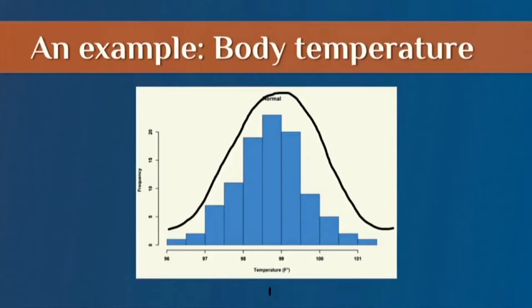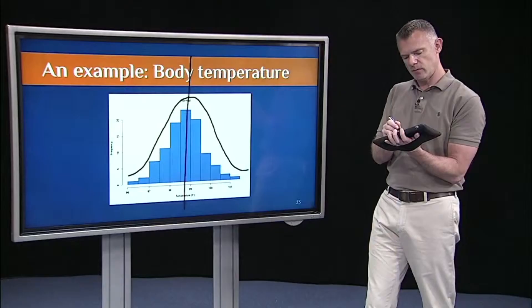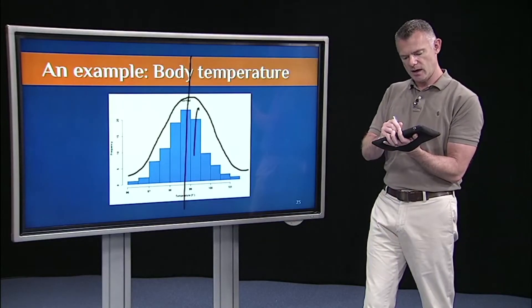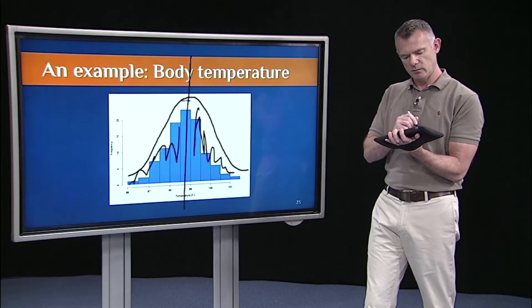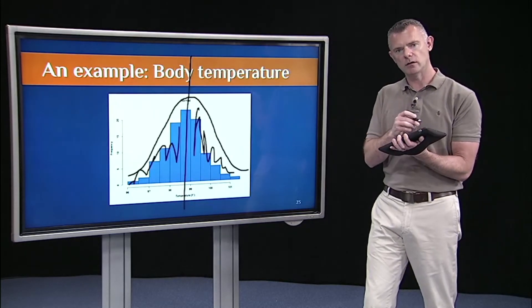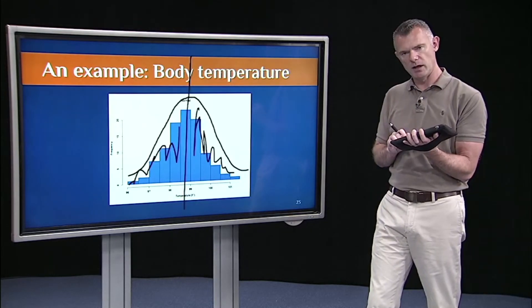And it's symmetrical around the mean, around the average. You can see the number of cases beyond the mean is about equal to the number of cases below the mean. So it's symmetrical and has this nice normal bell-shaped curve.